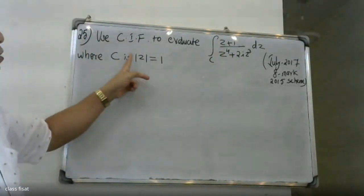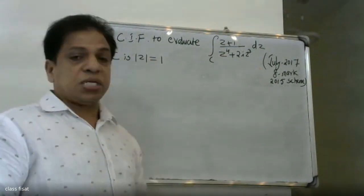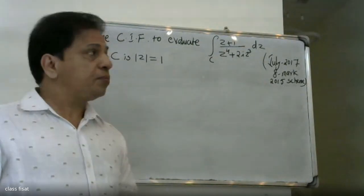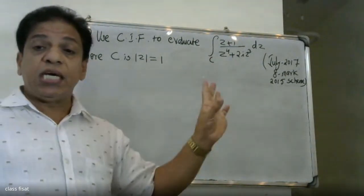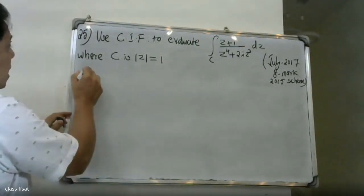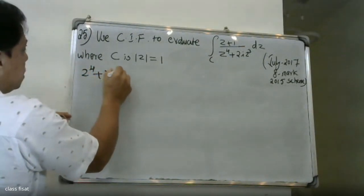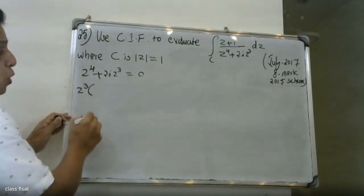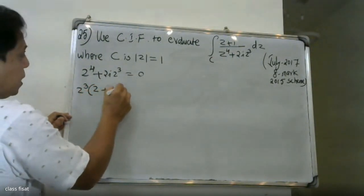Where C is a given contour. The problem is to identify the singular points. We write the denominator: z⁴ + 2i·z = 0, which gives z equal to 0 as one singular point.